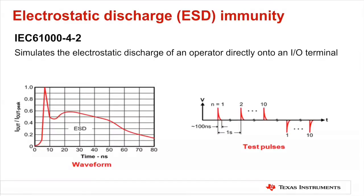In industrial applications, you need to protect a device from these transients to enhance reliability. A test standard called IEC 61000-4 simulates these EOS events and awards a certification to products that prove to be immune to transient EOS. It begins with the electrostatic discharge, or ESD, immunity test called IEC 61000-4-2.